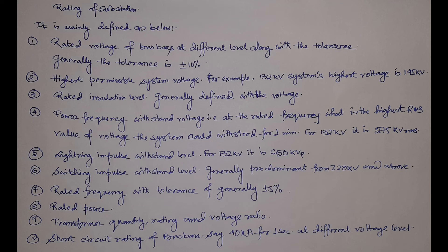Then comes the lightning impulse withstand voltage. For 132 kV it is 550 kV peak, or there is a system of 650 kV peak. Then comes the switching impulse withstand voltage. The switching impulse withstand voltage is predominant for 220 kV and above; for 132 kV and below, the lightning impulse withstand voltage is predominant. When switching occurs or lightning occurs, a high voltage surge enters the system and the insulation must prevent its adverse effects. Up to 132 kV the switching surge effect is less than lightning, so the system is designed on the lightning impulse voltage criterion. At 220 kV and above, switching impulse can cause more harm than lightning, so it becomes predominant.